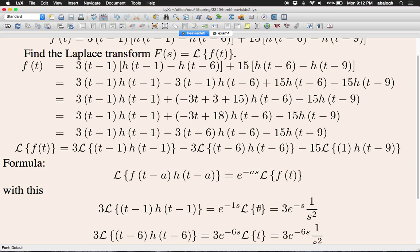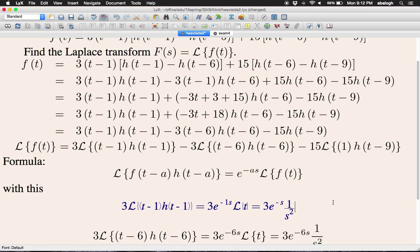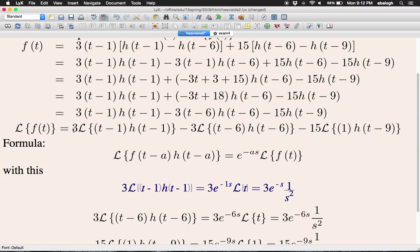The Laplace transform of t can be obtained from a table. It's 1 over s squared. I left out here 3, so let's put it back. The 3 multiplier is supposed to come from there.